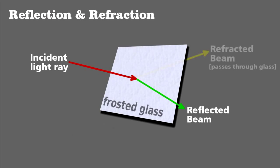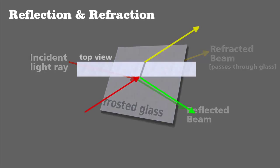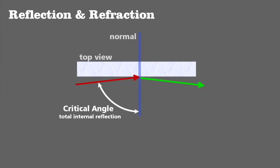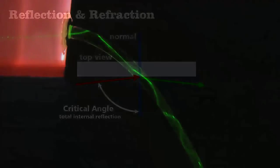Recall that any time light strikes a surface, it can either be absorbed by the material, reflected from it, or pass into and through it. The latter we call refraction. It's easier to see from a top view. Reflection and refraction can happen at the same time, but if a light ray hits the surface at an angle greater than the critical angle, it will be completely reflected and not refracted.